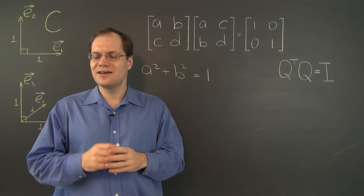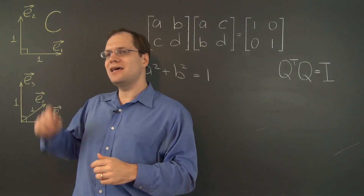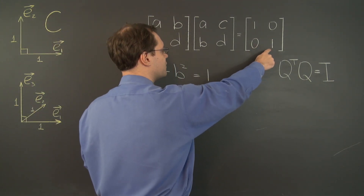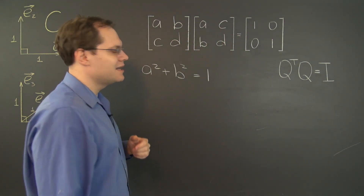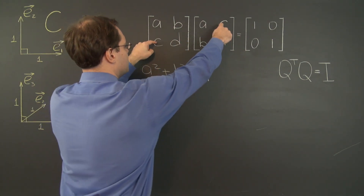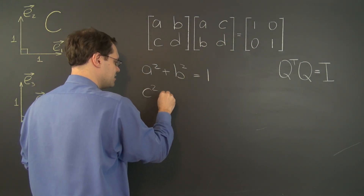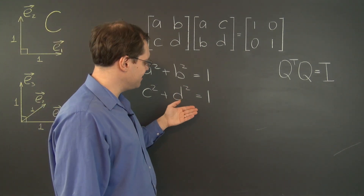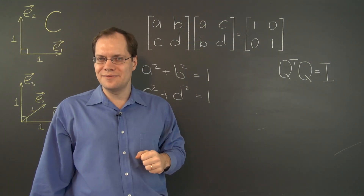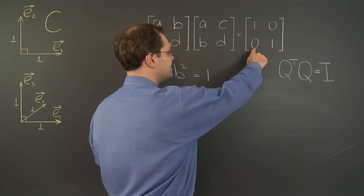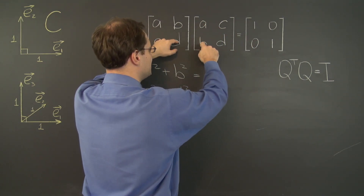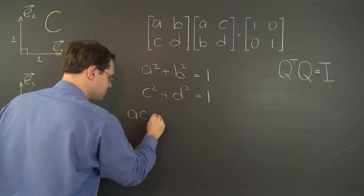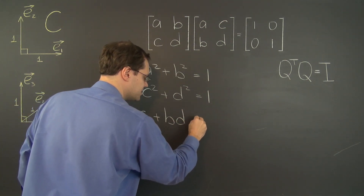This is the algebraic statement of the fact that the first column is unit length — more precisely, the vector that this column represents with respect to this basis has length 1. Similarly, the bottom-right 1 comes from the dot product of the second row and second column, giving C squared plus D squared equals 1, which is the statement that the second column also has length 1.